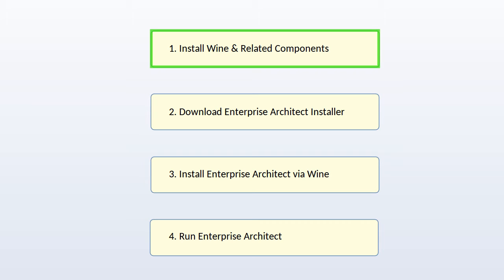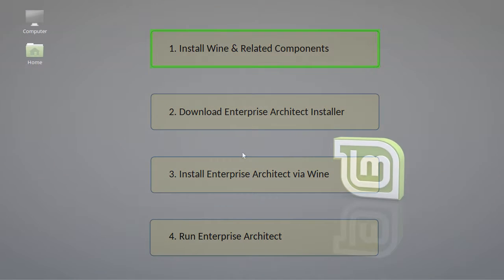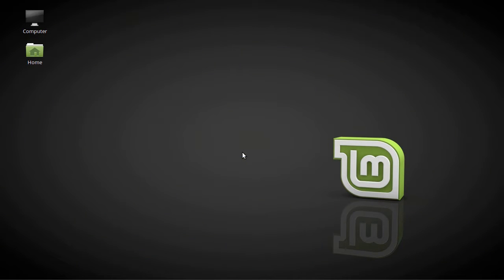Our first step towards running Enterprise Architect on Linux or Mac OS is to download and install a suitable version of the Wine Package. And for those wondering about Crossover, a commercial product based on Wine, that is also a viable option which we support. For this demo though, I'll use the free Wine Package.